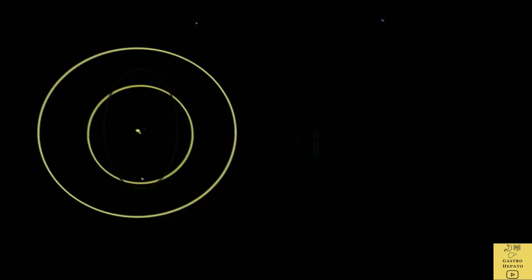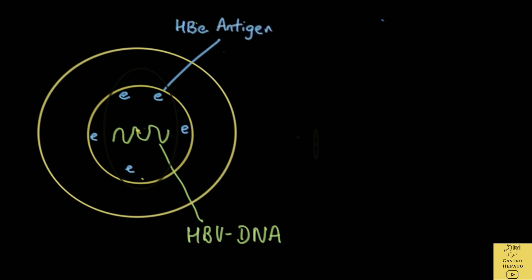First, we have the genetic material found in the center of the virus. This is called the HBV DNA. Then we have the E protein which is present in the inner layer of the virus. In medical terms, we call the E protein the HBeAg or HBeAg.